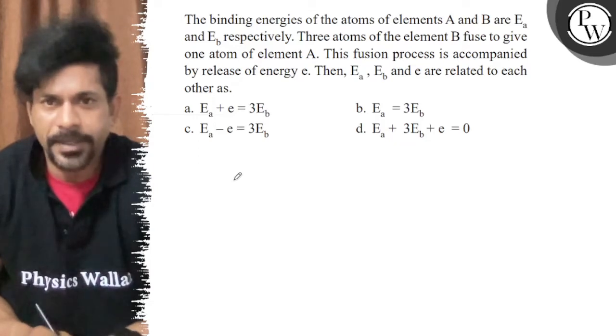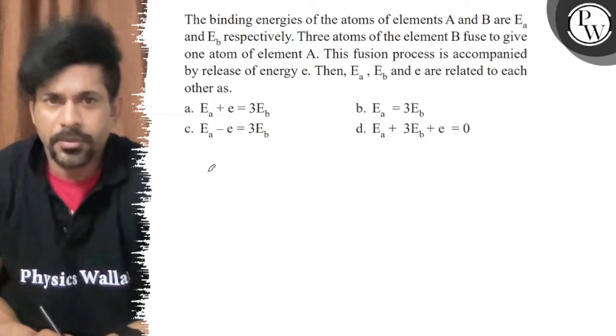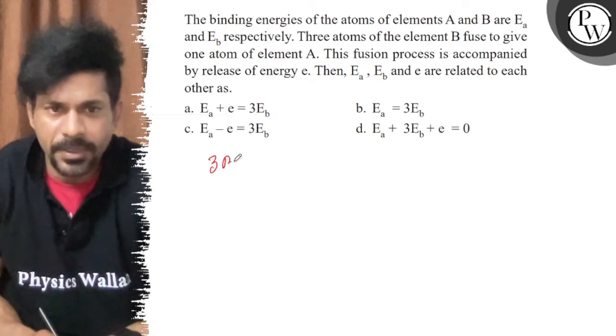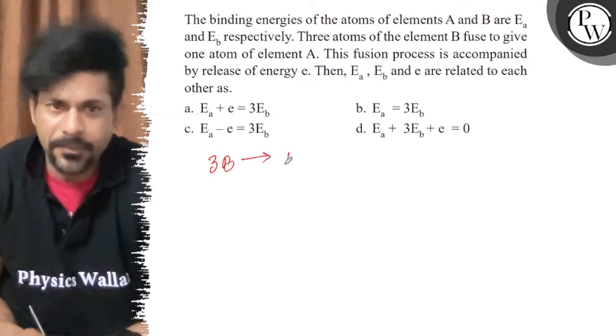The binding energies of the atoms of elements: three atoms of B, so thrice of B added gives A and releases the energy e.